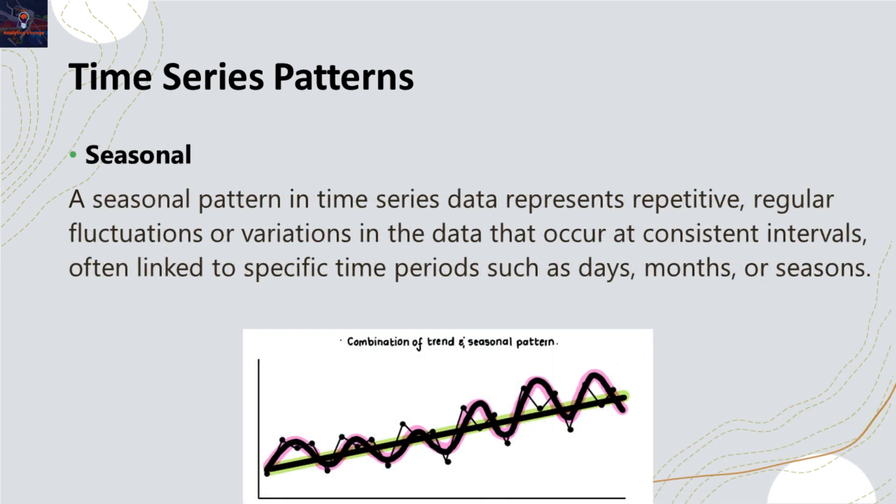Seasonality pattern: seasonality refers to regular and predictable patterns of variation that occur within specific time frames, often on a yearly basis. For instance, sales of winter clothing tend to increase in colder months and decrease in warmer ones. These fluctuations typically repeat themselves in future iterations of that specific time frame. Seasonality occurs due to weather or institutional reasons, for example, holidays, cultural celebrations, or accounting periods.